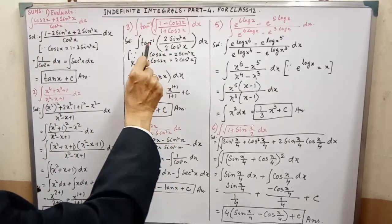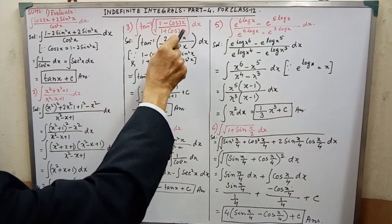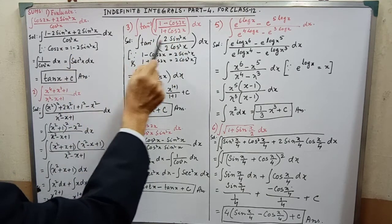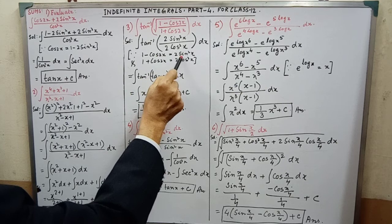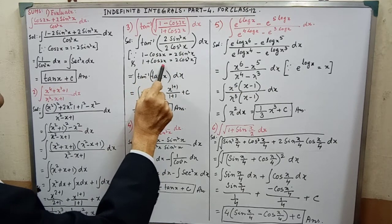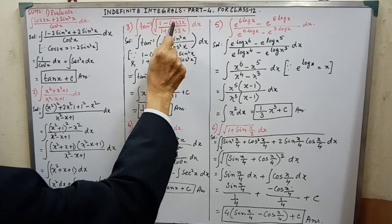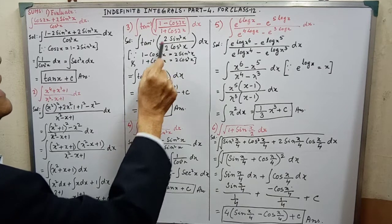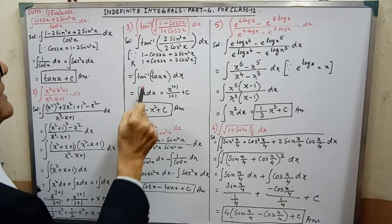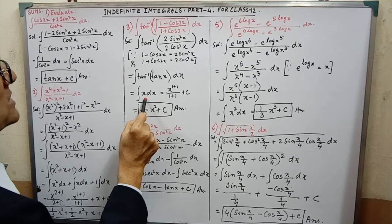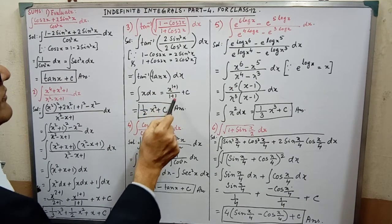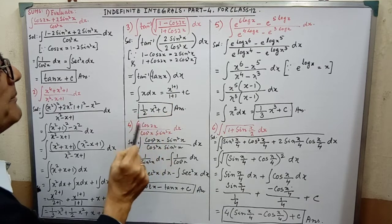See here — there is a square root over this. Then 1 minus cos 2x: 1 minus cos 2x equal to 2 sin square x, and 1 plus cos 2x equal to 2 cos square x. By applying the formula, we are getting this. Then, easily, we are getting this frame. After simplification, we are getting x dx. And applying the formula, we are getting half x square plus c.